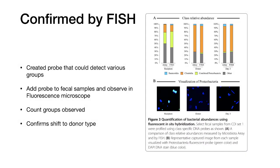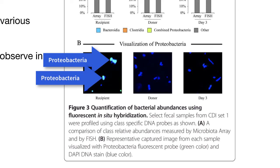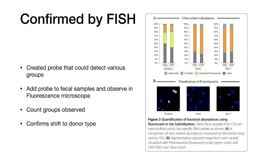FISH probes were also used to look for specific groups of interest in the fecal sample. C. diff patients were found to have an increase in Proteobacteria, and the researchers wanted to confirm their presence by other methods. A DNA probe was synthesized that would hybridize only to Proteobacteria, then mixed with a fecal sample and observed in a fluorescence microscope. As shown in the figure, the Proteobacteria became undetectable after the transplant — the microscope provides visual evidence and is a fast way of finding this group in a sample.